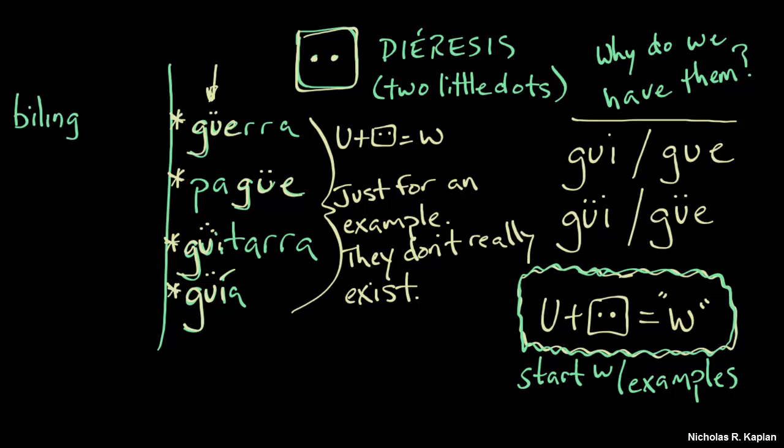So what are some real words? Well, we have bilingüe. Because it's not bilingue. It's bilingüe. Vergüenza. So that G-U-E is guen. Alright?